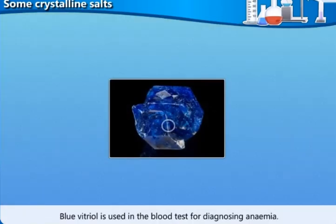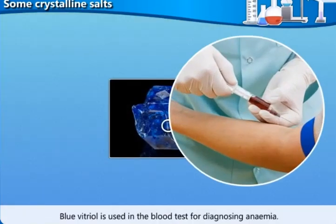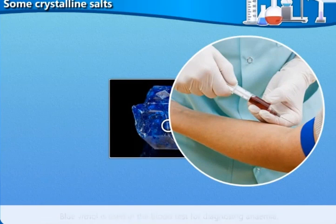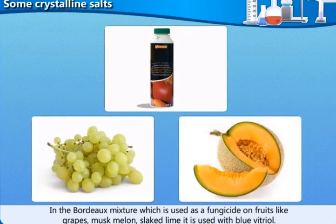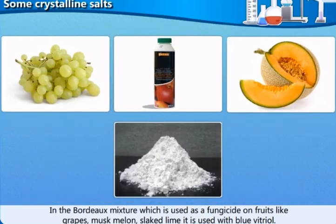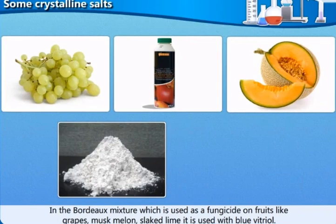Blue vitriol is used in the blood test for diagnosing anemia. In the Bordeaux mixture, which is used as a fungicide on fruits like grapes, muskmelon, and watermelon, slaked lime is used with blue vitriol.